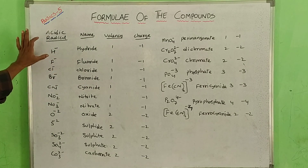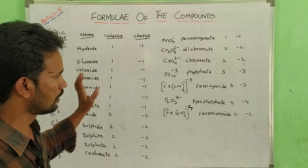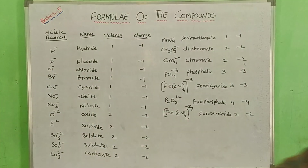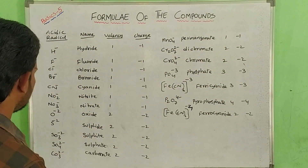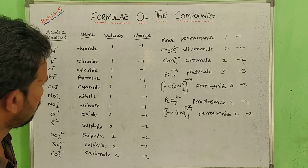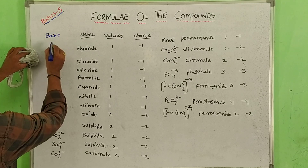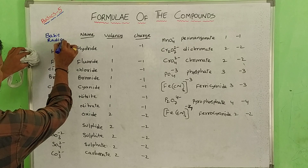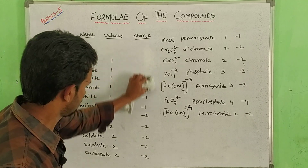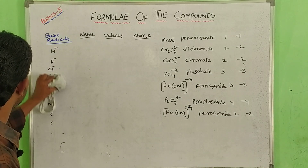So guys, these are the acidic radicals — easy compounds and formulas. Now note down the basic radicals. Okay, arrange and note. Next one — basic radicals.